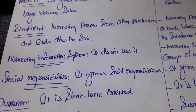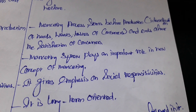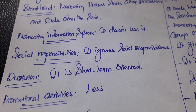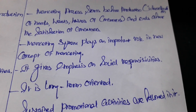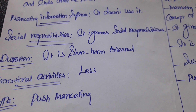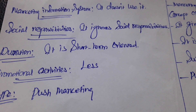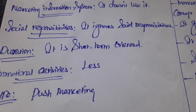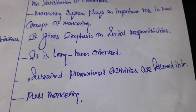Marketing information system is not used in the old concept of marketing, whereas it plays an important role in the new concept. Social responsibility is ignored in the old concept, whereas the new concept gives more emphasis on social responsibilities. The old concept is short-term oriented, while the new concept is long-term oriented. Promotional activities are less in the old concept compared to the new concept, where sustained promotional activities are followed.